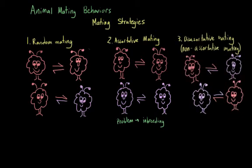Disassortative mating or non-assortative mating is the opposite of assortative mating. So with assortative mating, individuals with similar traits were more likely to mate. In contrast, non-assortative mating describes a situation where individuals with different or diverse traits mate at a higher frequency than we would see with random mating.